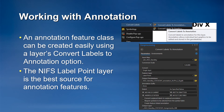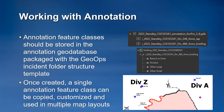An annotation feature class can be created in a file geodatabase using the Convert Labels to Annotation option from the context menu of a labeled layer within a map layout, or by simply creating a new annotation feature class within the annotation geodatabase. The NIFS label point layer will almost always be the best source for creating new assignment annotation feature classes. Annotation feature classes should be stored in the annotation geodatabase distributed with the GeoOps incident folder structure template, and both the geodatabase and feature classes should be named according to GeoOps naming standards. Once created and populated, an annotation feature class with a specified reference scale can generally be used on incident maps and products laid out on the same map scale.